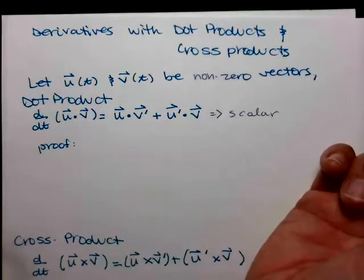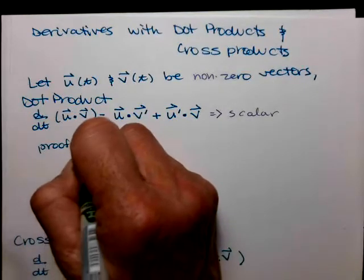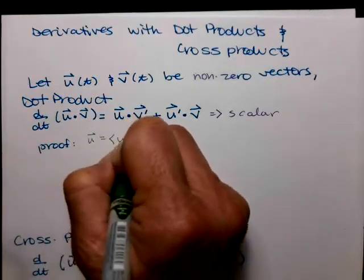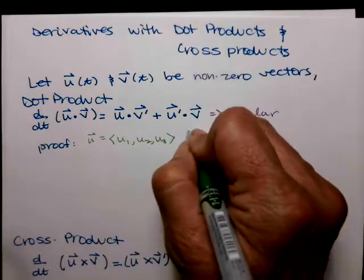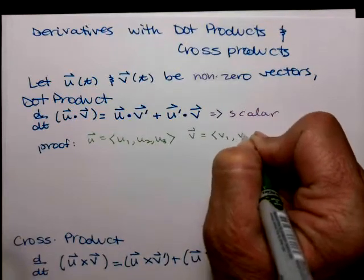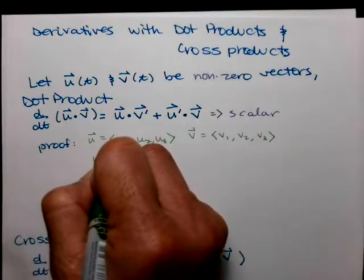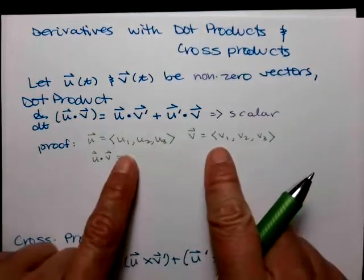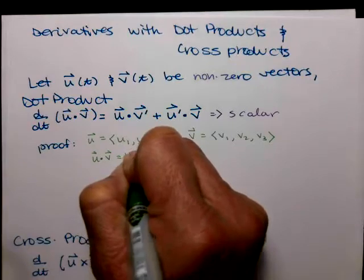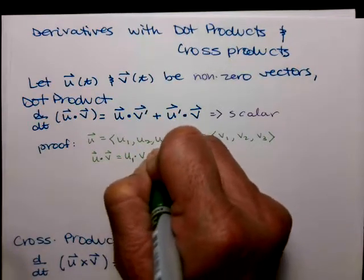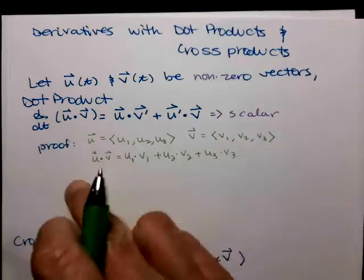Let's look at a proof of this one. For u dot v, let u have the components u1, u2, u3, and v have the components v1, v2, v3. For u dot v, we multiply the respective components and add them up: u1 times v1 plus u2 times v2 plus u3 times v3.